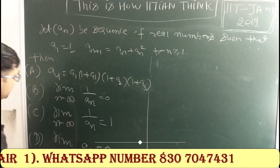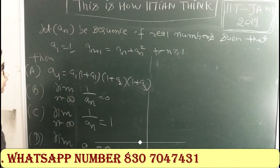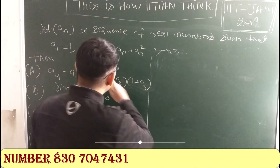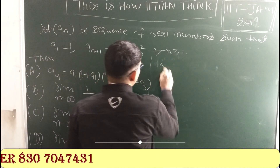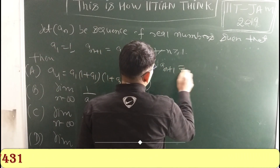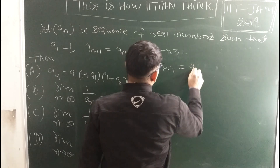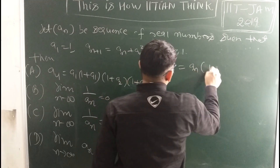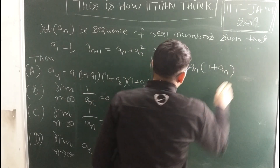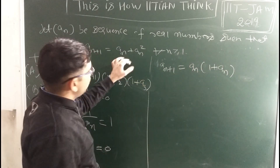So you have 4 options. Let's start. We can write aₙ₊₁ equals aₙ(1 + aₙ), taking aₙ common.